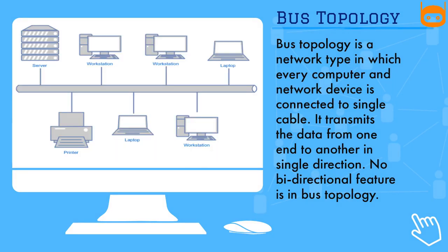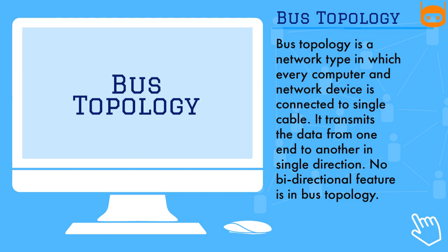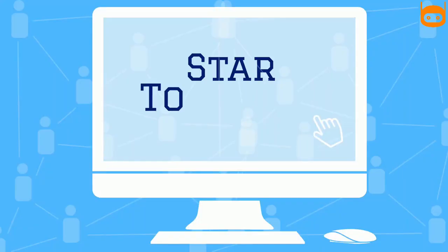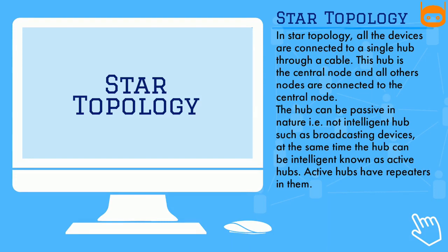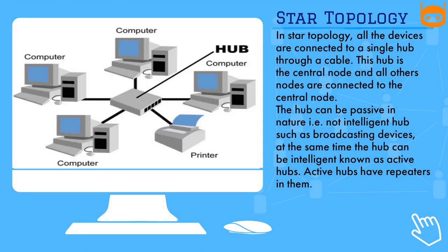Bus topology is a network type in which every computer and network device is connected to a single cable. It transmits data from one end to another in a single direction. There is no bi-directional feature in bus topology.